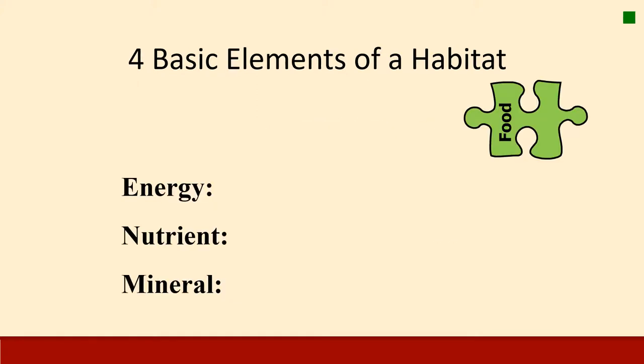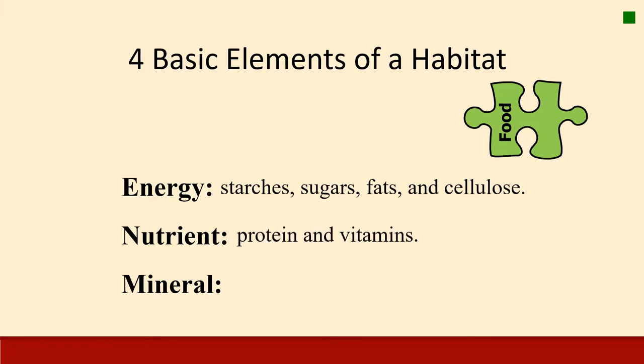We're going to talk about each of these elements starting with food. Food includes energy, nutrients, and minerals — all requirements for an animal's habitat. Energy comes from starches, sugars, fats, and cellulose. Nutrients come from proteins and vitamins. Minerals mostly come from phosphorus and potassium.